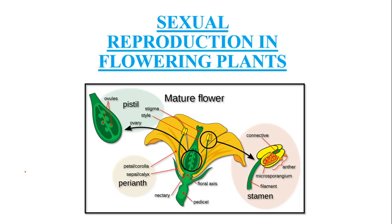Here you can see a mature flower which consists of both male and female reproductive organs, so this is a bisexual flower. Unisexual flowers are those which have the organs separately on different flowers or on different plants. Here you can see that this is the pistil, which is the female reproductive part, and this is the stamen, which is the male reproductive part. The male reproductive part is known as androecium and the female reproductive part is known as gynoecium.